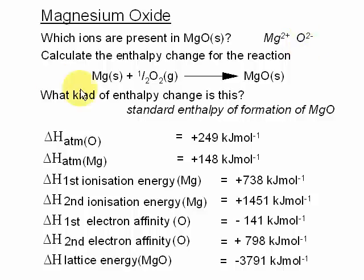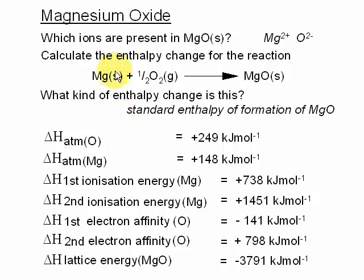The question may ask: calculate the enthalpy change for the reaction of magnesium reacting with oxygen to give magnesium oxide. A supplementary question asks what kind of enthalpy change this is. This is the standard enthalpy of formation of magnesium oxide, because you're starting from the elements and ending up with the compound.